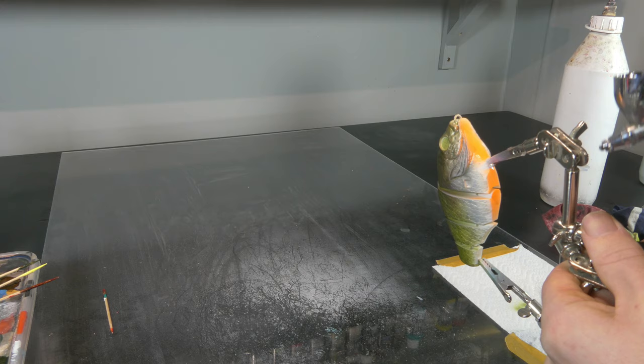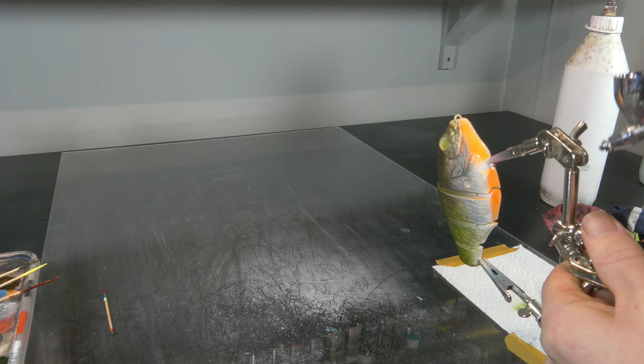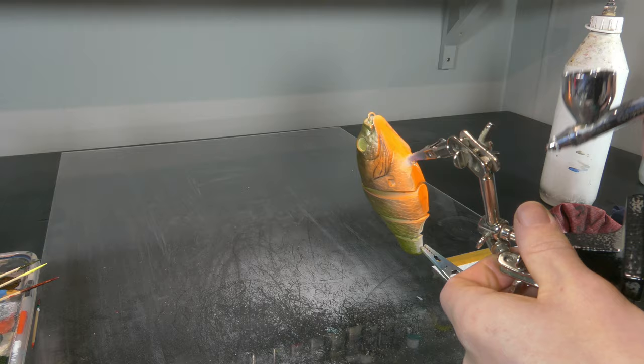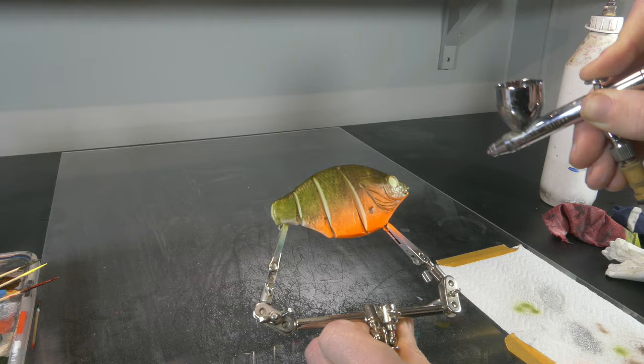So now I'm applying my fluorescent orange all over everything that I made white. I am doing this in a few light thin coats so that I can control the fading out of the orange into the green of the body.